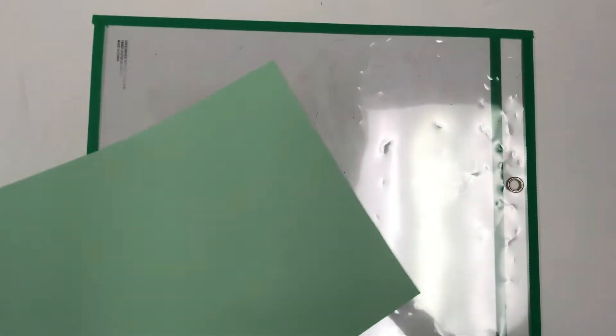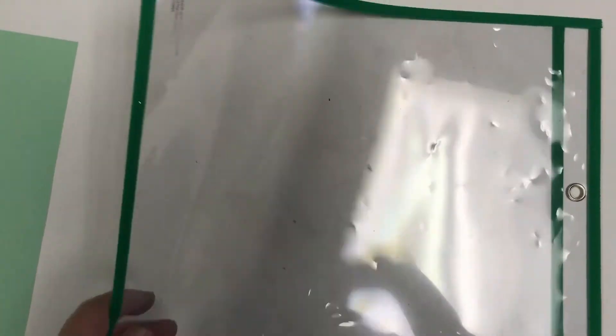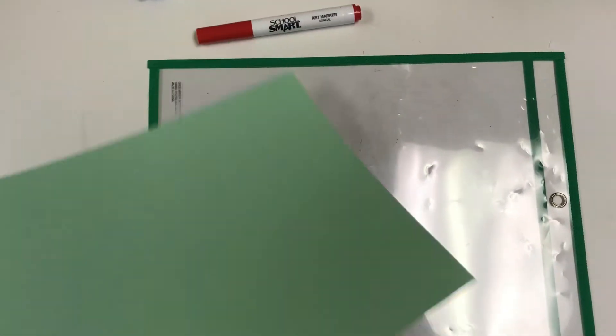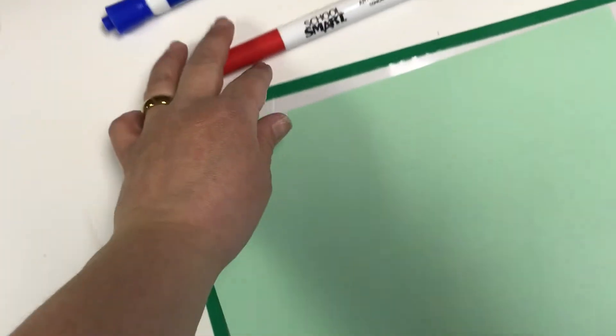So if you could go to your backpack and get your plastic sleeve and then a piece of paper. You're going to also need a marker and your dry erase marker from your backpack.